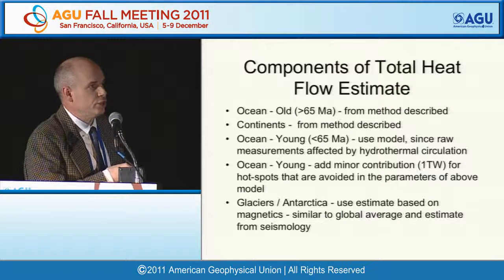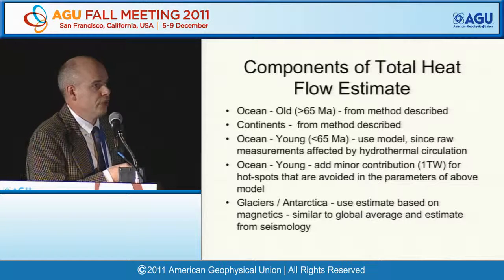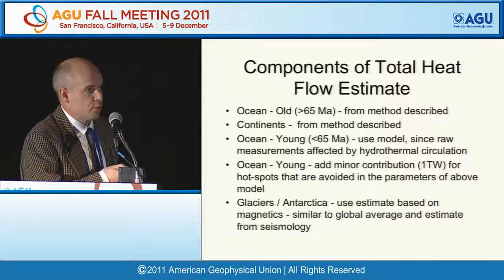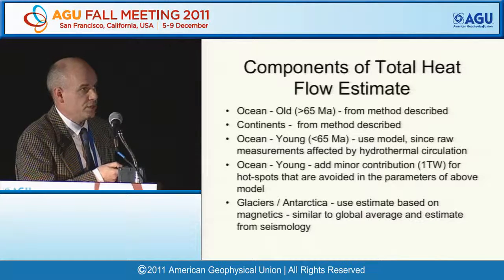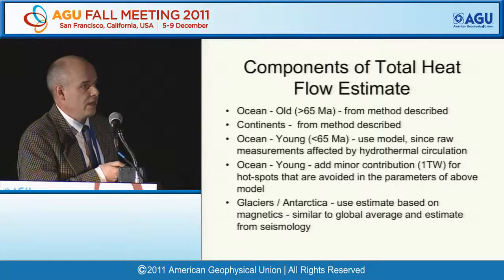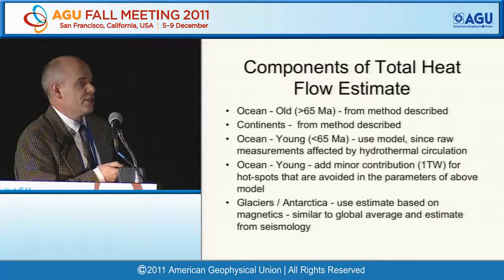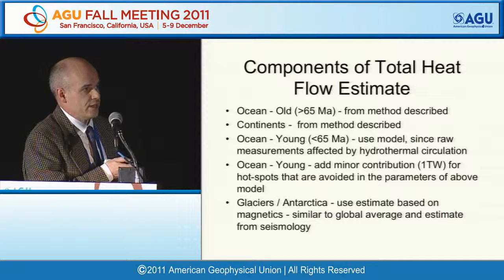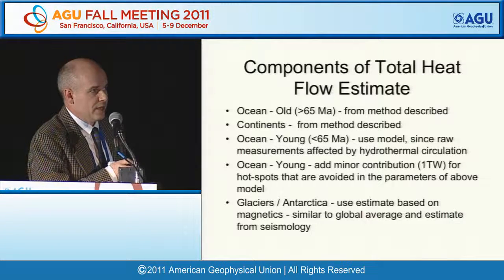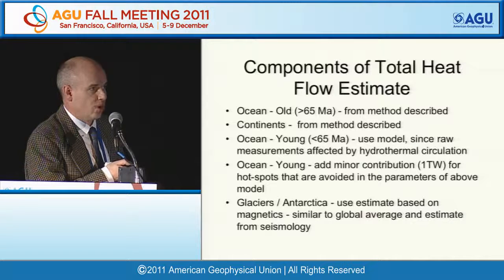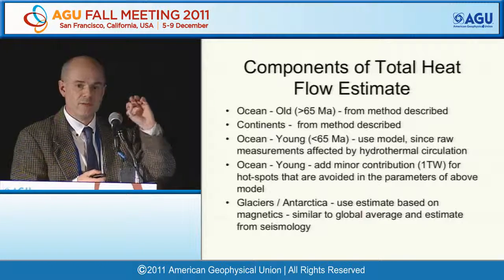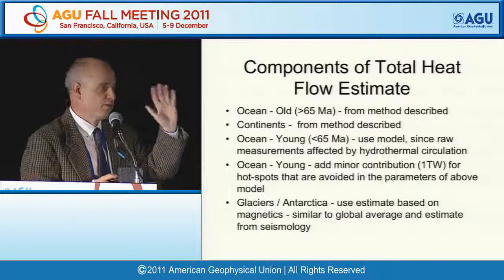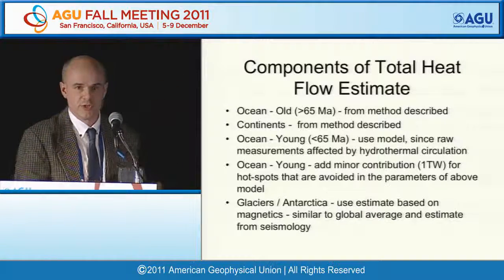For the young oceans, we add a contribution for hot spots, which are avoided in the model parameters used for prediction. For Antarctica and glaciers, we used an estimate based on magnetics, which is similar to the global average and estimates from seismology, but considerably lower than the estimate from only three to five raw data points.